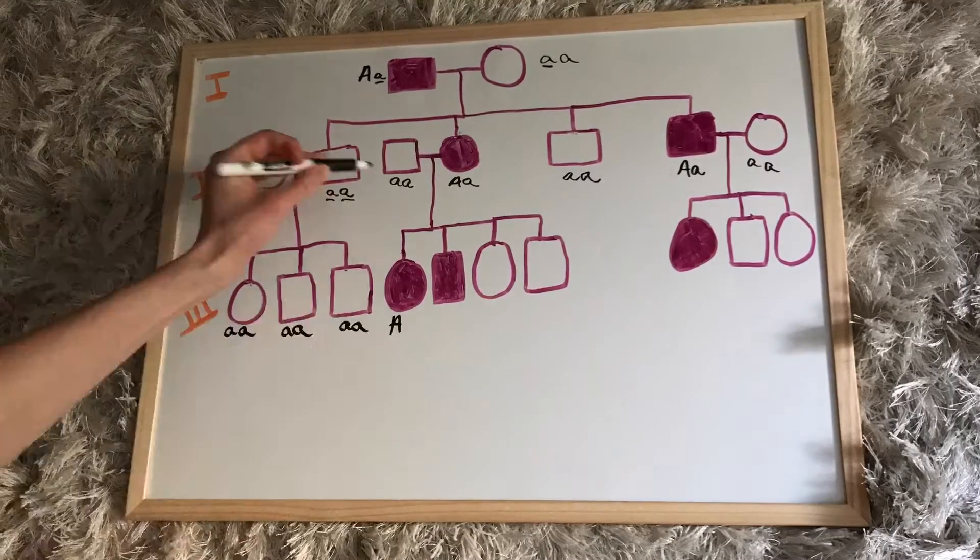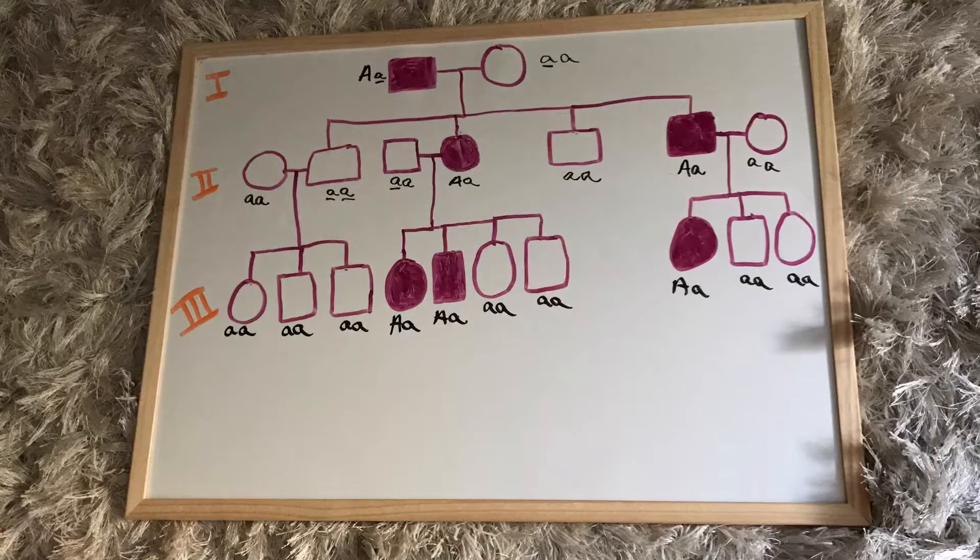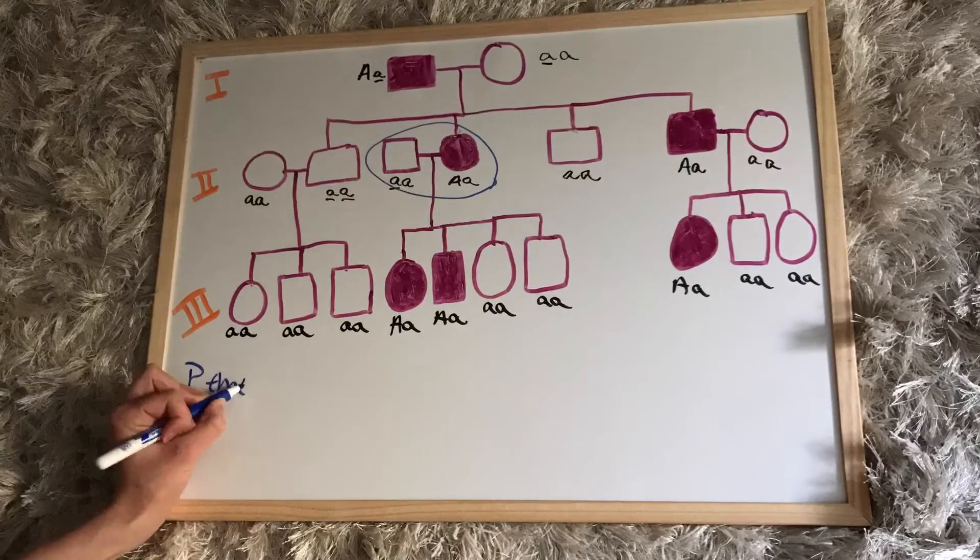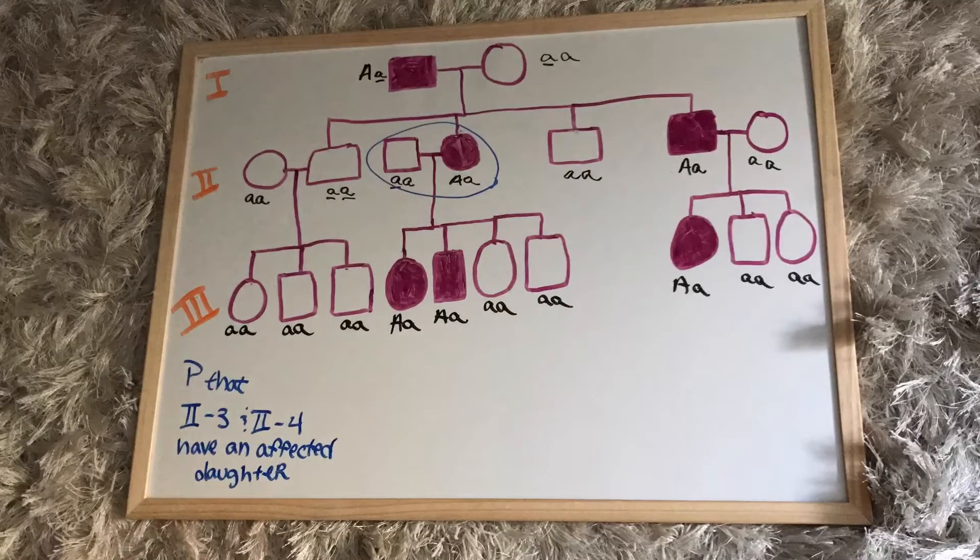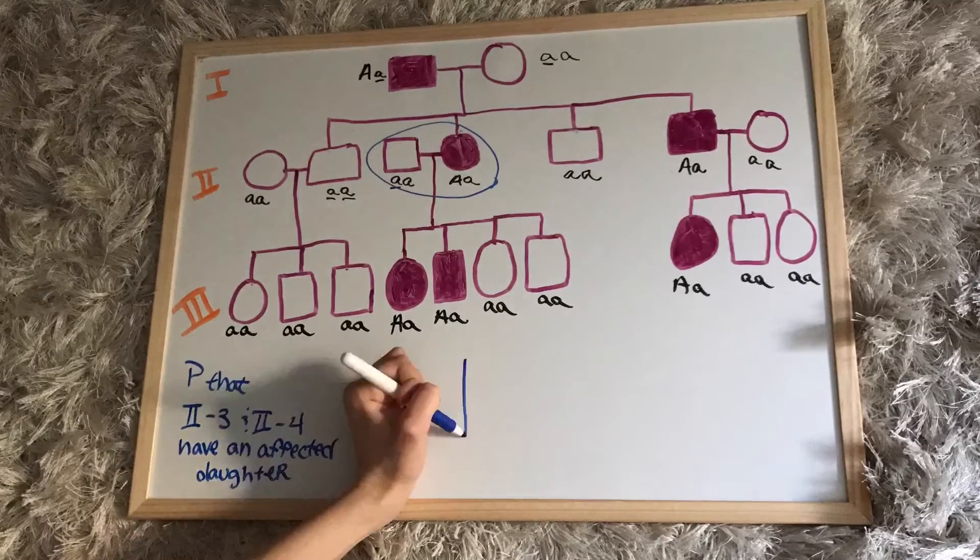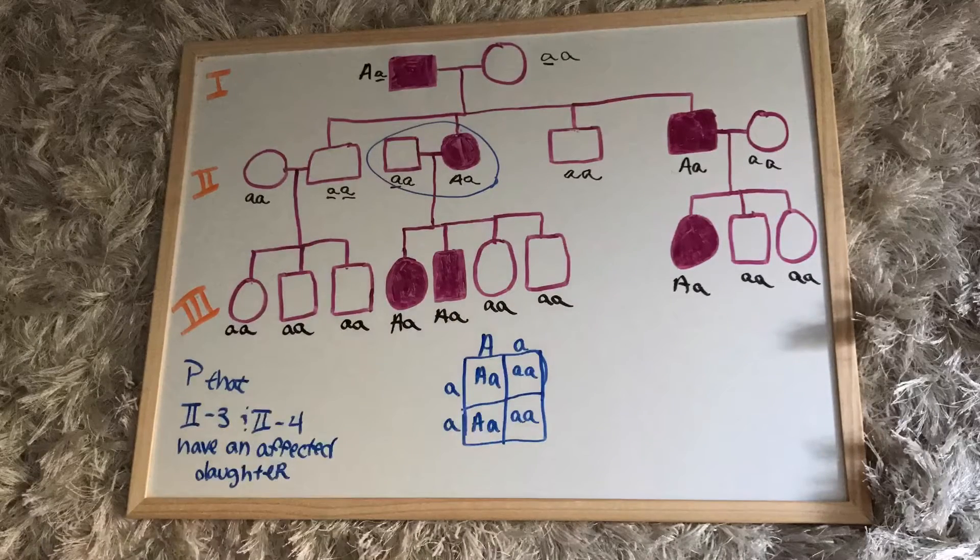When filling in alleles, make sure to give each child one allele from mom and one allele from dad. So let's say that we want to find the probability that the second family gave birth to an affected daughter. Since this is two parts, we'll start with part one, the Punnett square.